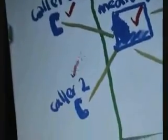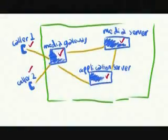Ideally, you will need at least six computers: one for the SIP application server, one for the media server, one for the media gateway, and two for the SIP phones.